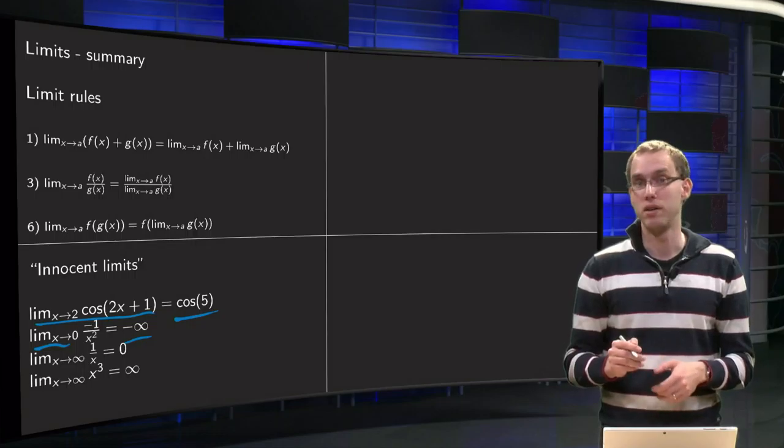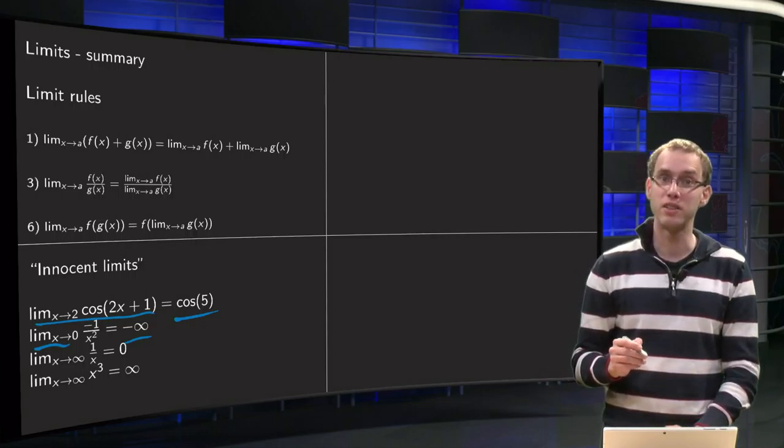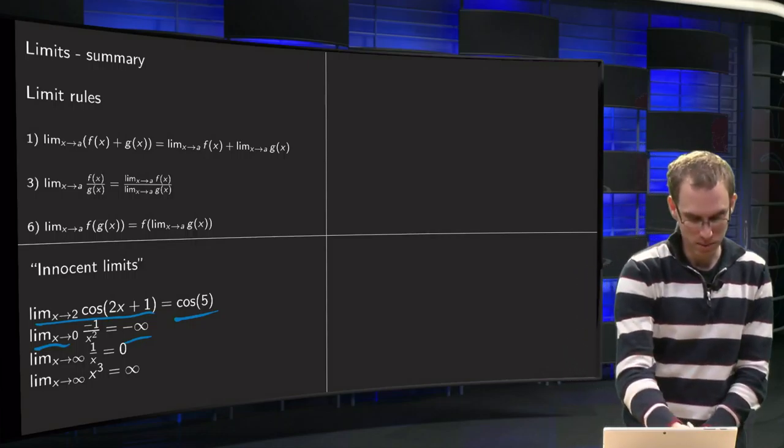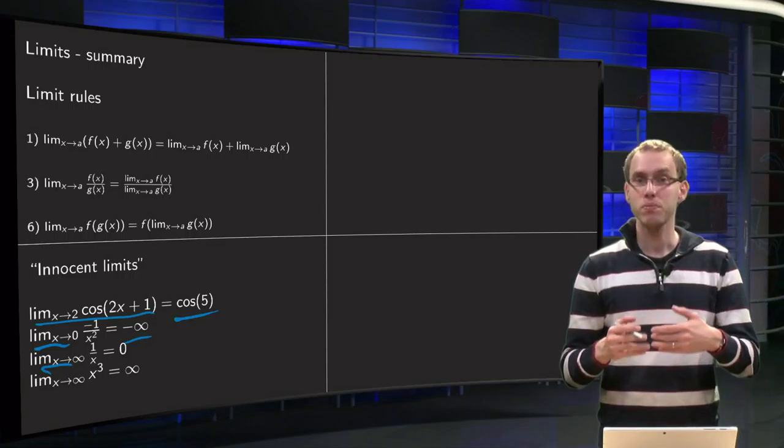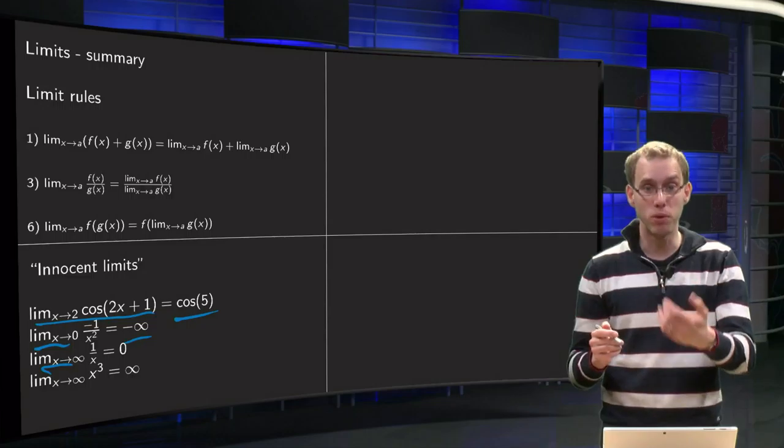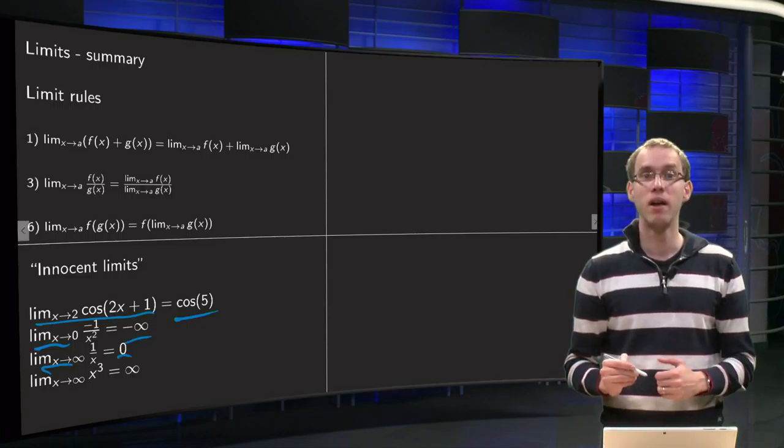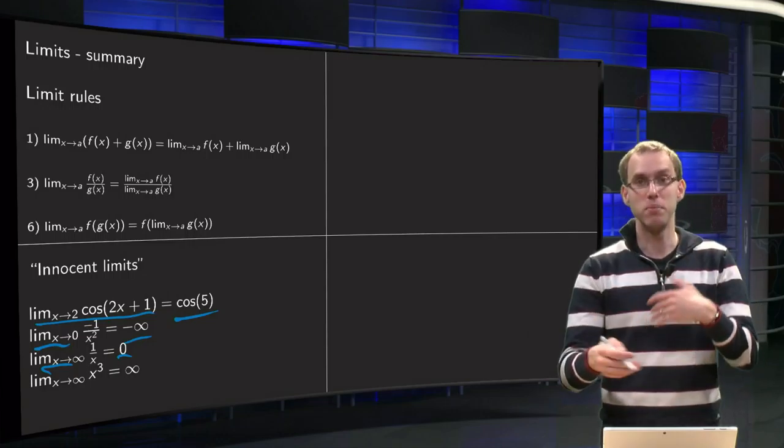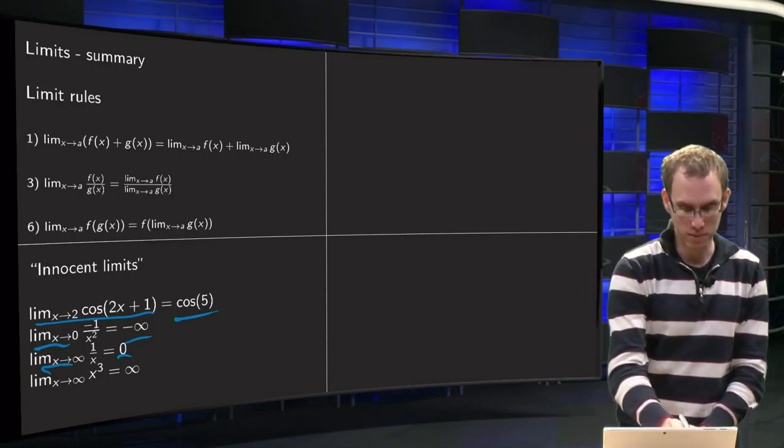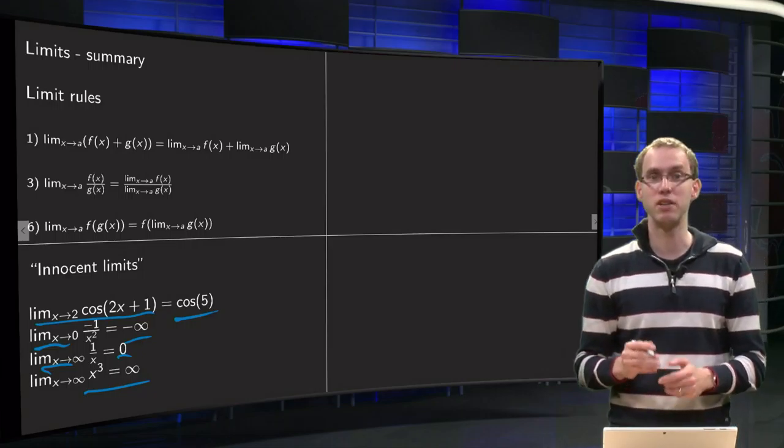And what happens at the plus infinity side, also an example of an innocent limit. If you take x to infinity of 1 over x, then your 1 over x gets smaller and smaller and the limit is said to be equal to 0. And limit x to infinity of something like x cubed, then if x gets bigger and bigger, your function also gets bigger and bigger and your limit is said to be infinity.